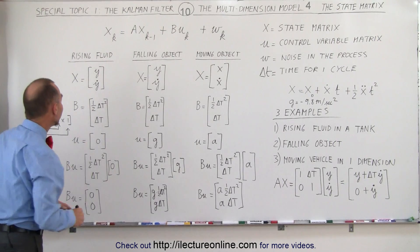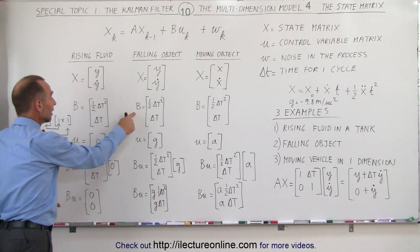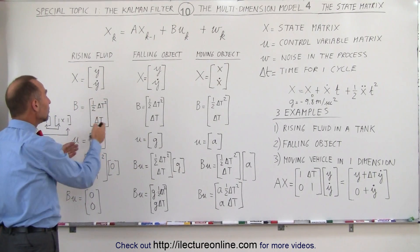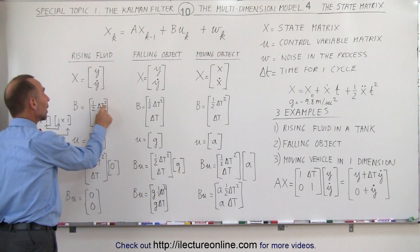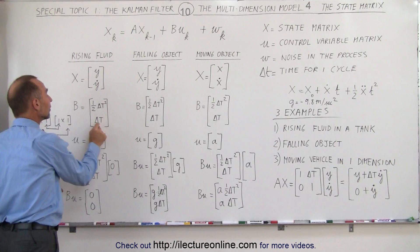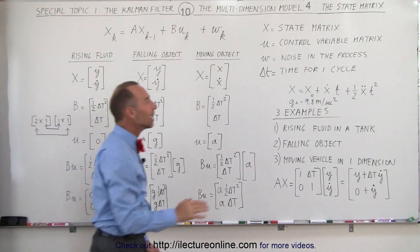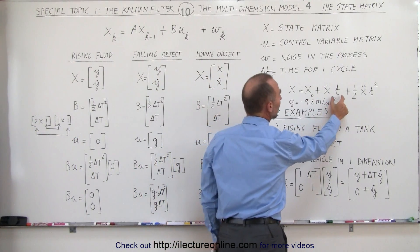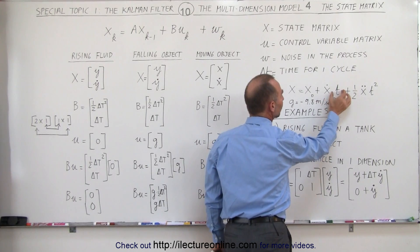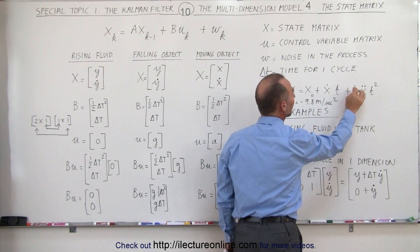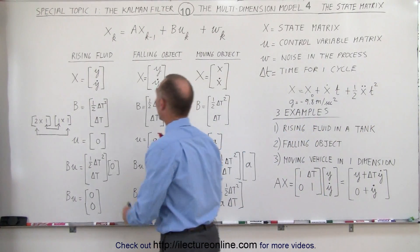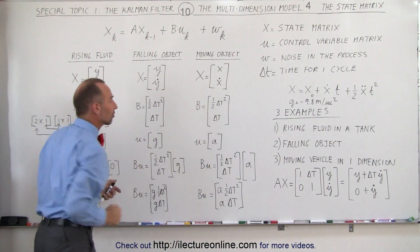Notice now that the B matrix is equal to a 2 by 1 matrix where the top element is 1 half times delta t squared and the bottom element is delta t. Notice that it is in line with the kinematics equation where we have the velocity multiplied times t and here we have the acceleration multiplied by 1 half t squared. That's where the B matrix comes from.